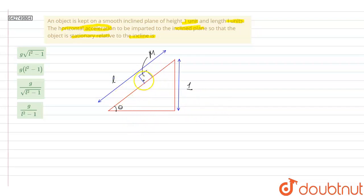As it is a smooth incline, that means there is no friction between the box and the incline. Under normal conditions, this box will start slipping down the slope. In the question, we have to find the amount of horizontal acceleration so that this box does not slide down the incline.